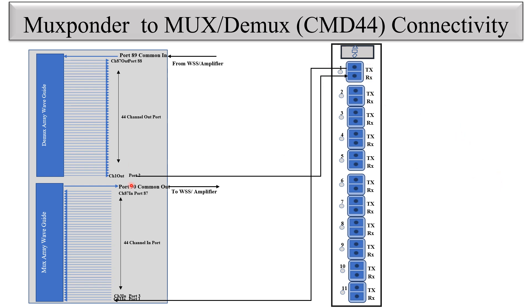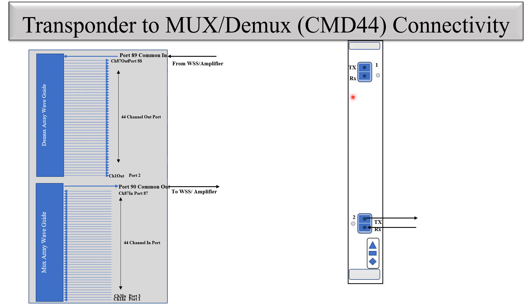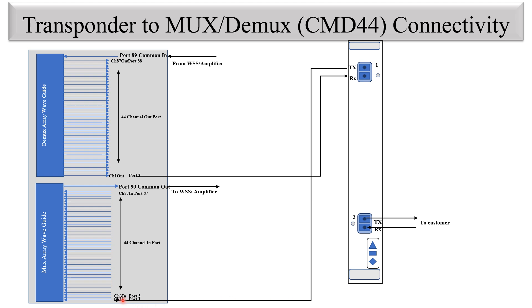In the same way you can see the connectivity between the Transponder and MUX-DMux. This is the same CMD44. You can see one client port and one line port — this is the type of Transponder card. Channel 1 out is physical port number 2 and channel 1 in is physical port number 1. The channel 1 out from port 2 is connected to the Rx port of the line port of the transponder. The TX port of the line port is connected to channel 1 in, port number 1. So port number 1 is channel in and port number 2 is channel out, connected to the TX and Rx of the transponder card.